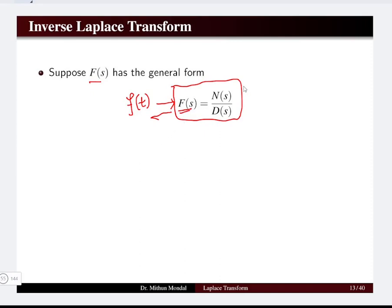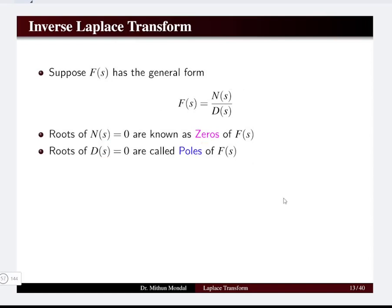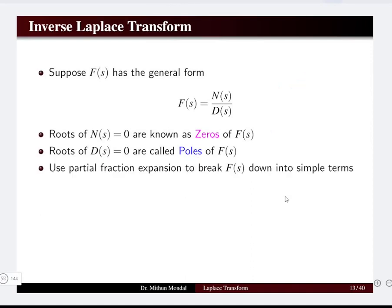If a signal F(s) is given, which is a function of Laplace variable s, it can be written in the form of numerator by denominator — that is, in fraction form. The roots of the numerator polynomial equated with zero are known as the zeros of F(s), and the roots of the denominator polynomial are known as the poles of the Laplace function F(s). These functions can be written in the form of K, the gain, multiplied with the zeros z_i, divided by the poles (s minus p_i). The zeros and poles are the roots of the numerator and denominator polynomials respectively.